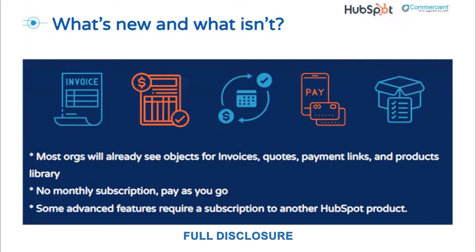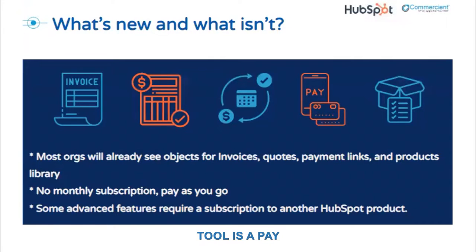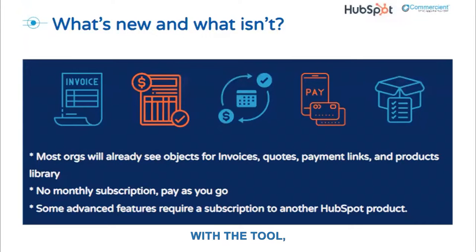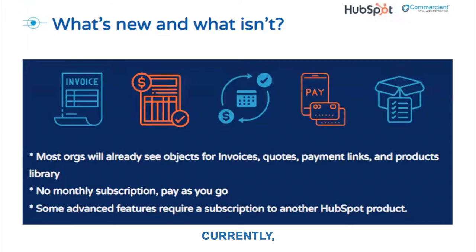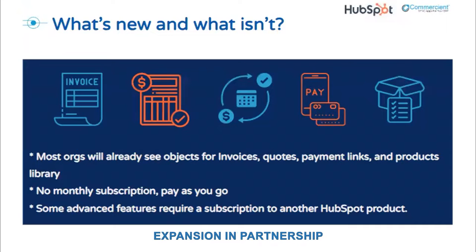The key to starting to use Commerce Hub features is setting up the payments tool or the Stripe integration. Full disclosure — if you've gained access to the invoice object through using the payments tool, please note that it is a pay-as-you-go feature. You'll pay a small fee for every payment you accept, though this fee is really no different than using a tool like Stripe. Currently these features are not offered globally, but HubSpot is committed to international expansion in partnership with Stripe, so it's only a matter of time.